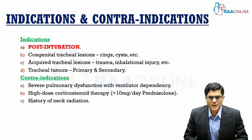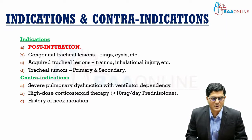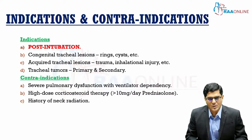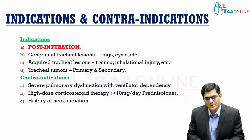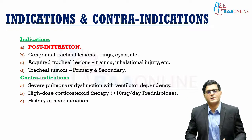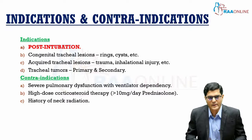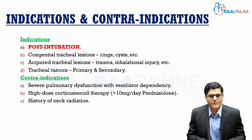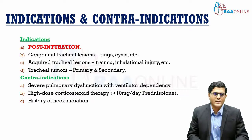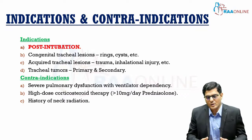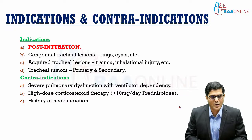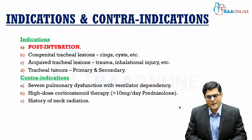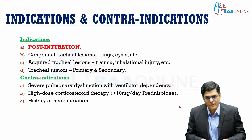The commonest indication for tracheal resection and reconstruction is post-intubation stenosis: with prolonged intubation, the patient develops stenosis and stricture, presenting with stridor after extubation. Other less common indications include congenital tracheal lesions, acquired tracheal lesions, and trauma — which is probably the second most common cause after post-intubation. Tracheal tumors requiring resection are quite rare because by the time they are diagnosed they are usually too advanced. Secondary tumors are more common than primary tumors and are mostly treated by palliative procedures such as stenting, laser surgery, or tracheostomy.